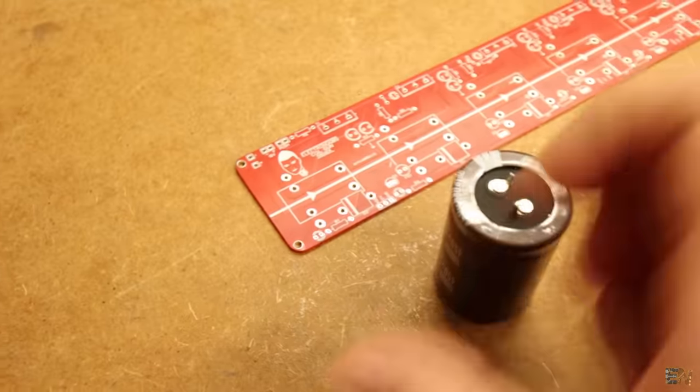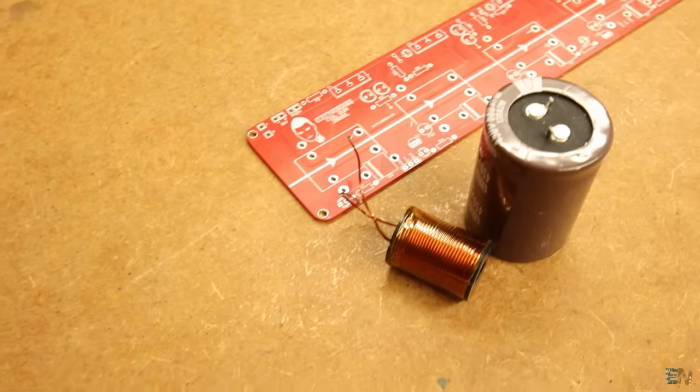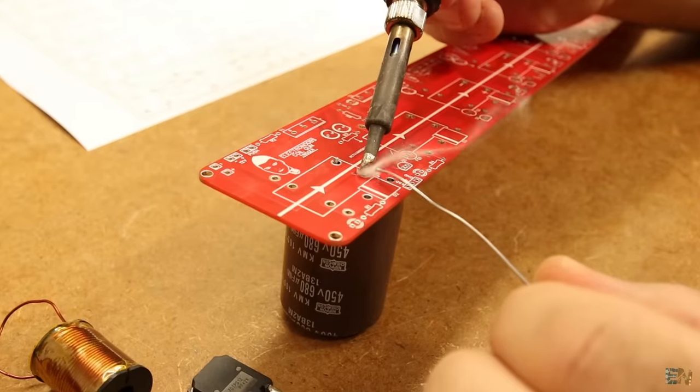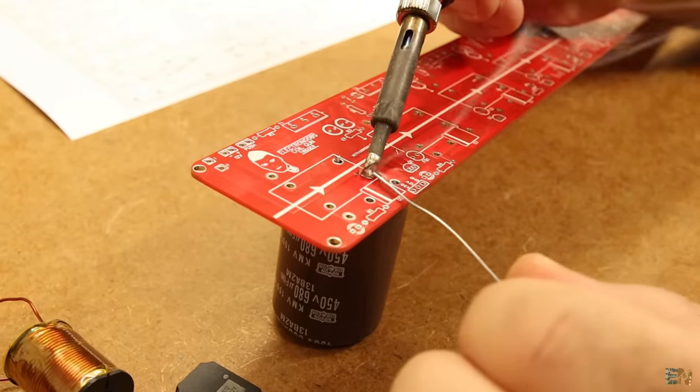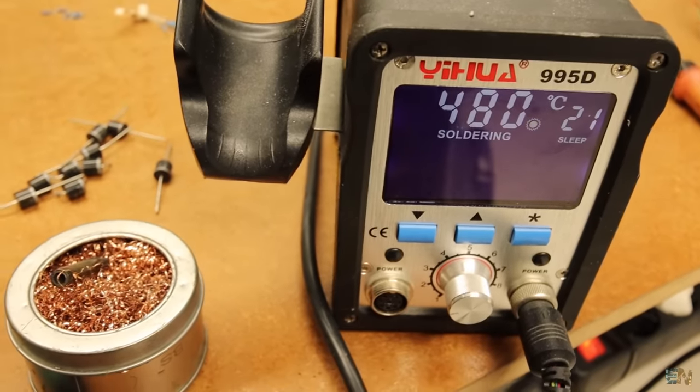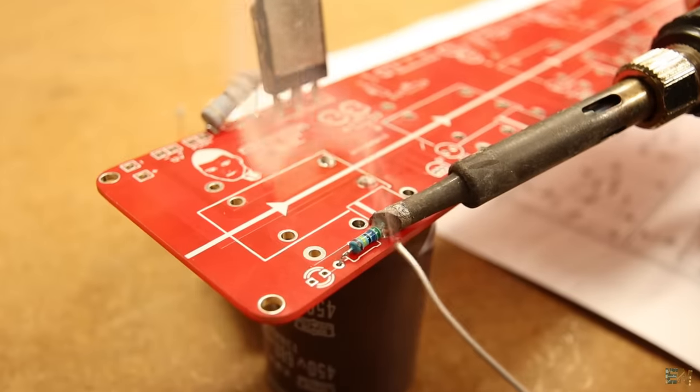I start with the first stage and adding all the components will take some time because we have a lot of them. Since the copper is so thick, it requires a lot of heat, so my soldering station can barely do it. This is a powerful station but the heat dissipation is too high.